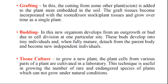In budding, instead of using a large part of the plant as the scion, we take the scion in the form of a bud and graft it on the rootstock. In budding, a new organism develops from an outgrowth or bud, and due to cell division at one particular site, these buds develop into tiny individuals. The newly added method is tissue culture technology — grow a new plant from a small part such as a cell, tissue, embryo, apical meristem, or lateral meristem. Using cells with totipotency and providing artificial environmental conditions and media, a cell is developed into a whole plant, known as tissue culture technology.